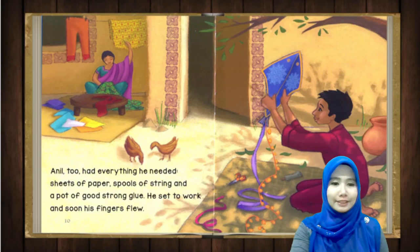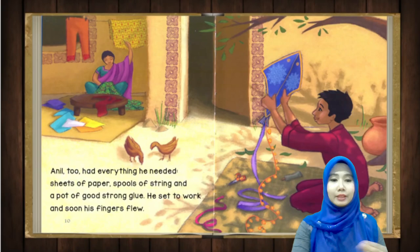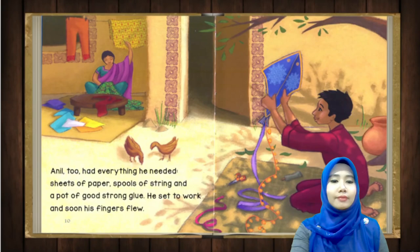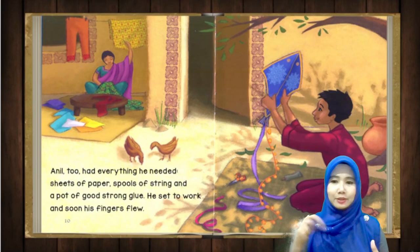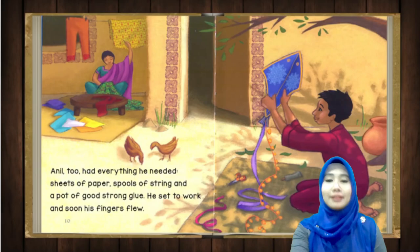Anul too had everything he needed: sheets of paper, spools of string, and a pot of good strong glue — Anul juga ada kertas, tali, dan juga glue. He set to work and soon his fingers flew — macam mak dia juga, dia dah ready untuk bekerja dan jari dia pun berterbangan ataupun cepat. Flew tu berasal daripada fly — it's the past tense of fly.